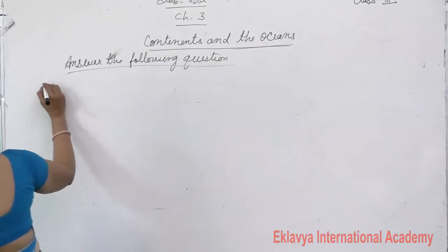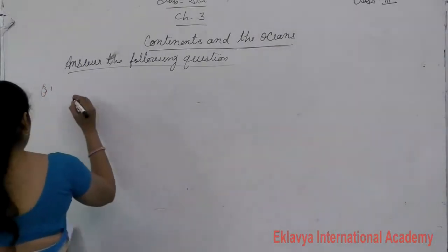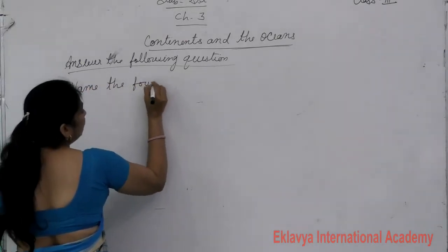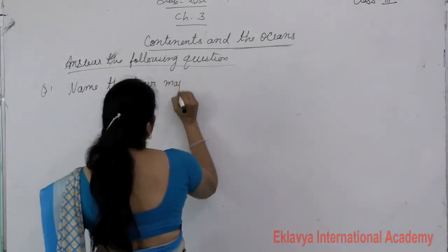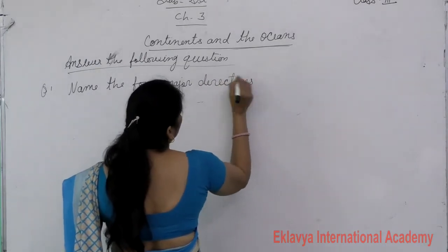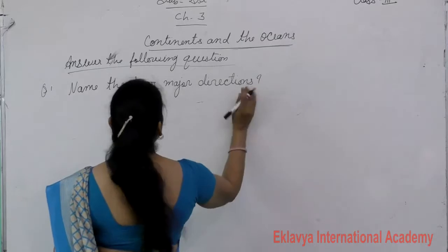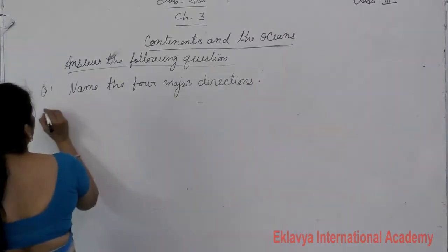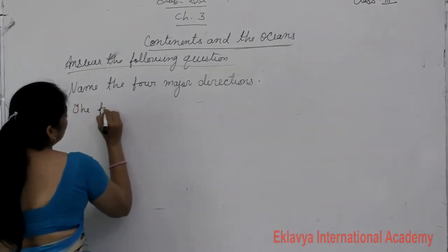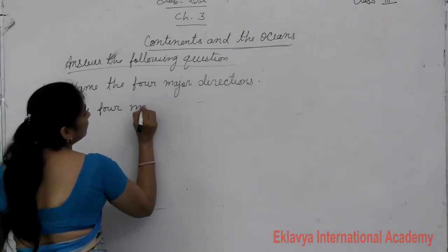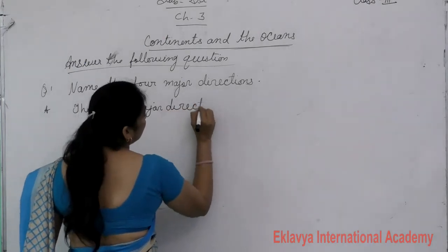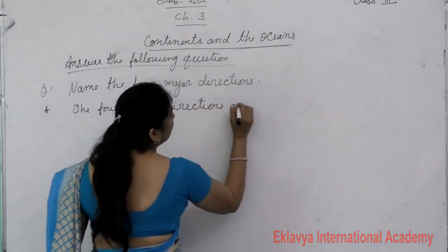First question is: name the four major directions. The answer — there are four major directions. The four major directions are north, south, east, and west.